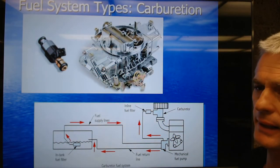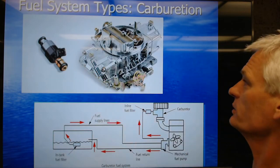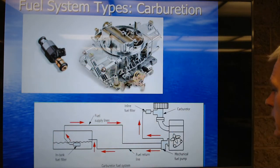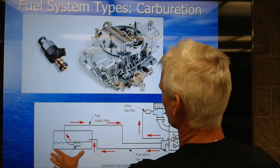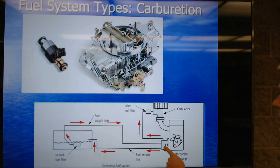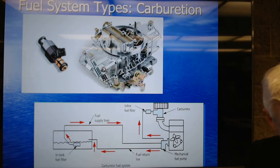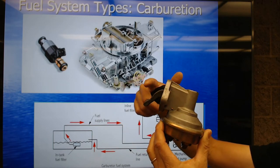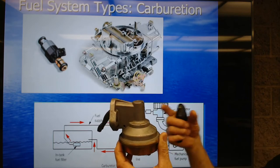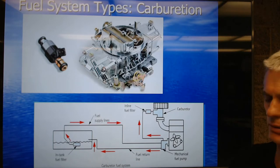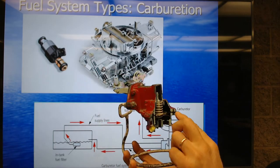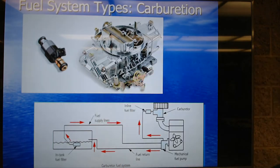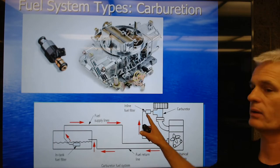Here's a comparison: a carburetor versus a port fuel injector nozzle. The carburetor is much larger; the injector is much smaller, and we have several of those. We save a lot of weight when we go to port fuel injection. In a carbureted system, you've got a fuel tank with an in-tank filter or sock, a supply line to a mechanically camshaft-driven fuel pump. It has its own lobe on the cam that strokes the diaphragm up and down, creating suction to pull fuel in. Then you have your carburetor — a fuel-mixing device — with a little inline filter.